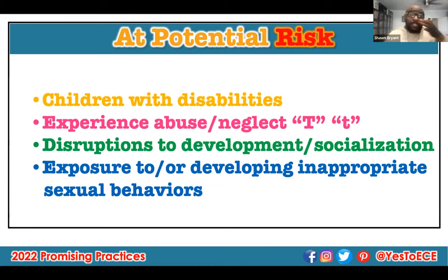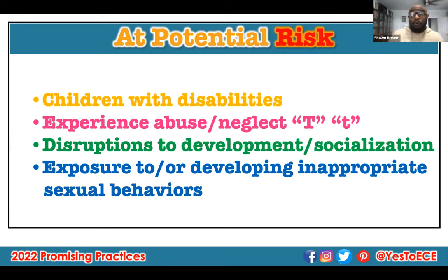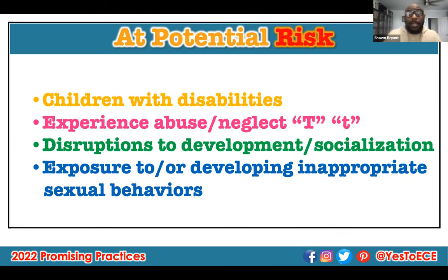What puts children at risk is disruptions to their development or socialization. For example, a disruption to a three-year-old's development is falling off the bed and breaking an arm. The body is now going to focus on healing that broken arm. When it's focusing on healing, another form of development has to slow down. For young two- and three-year-olds still developing expressive language, if language slows down, that inhibits their ability to say to a teacher or parent, 'This thing happened to me.'